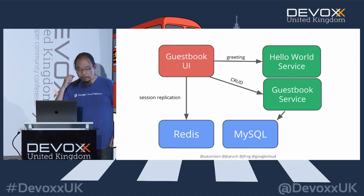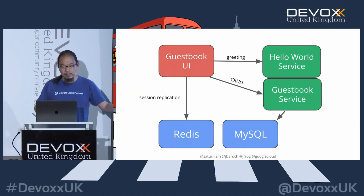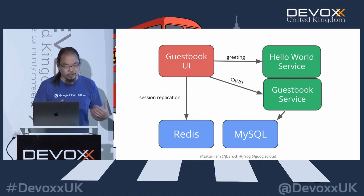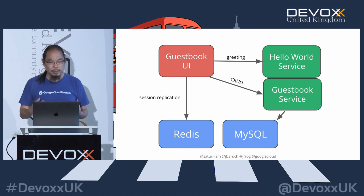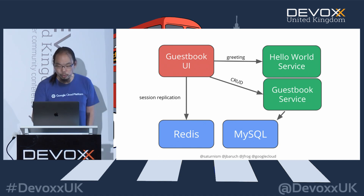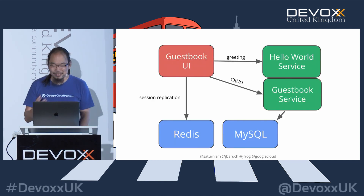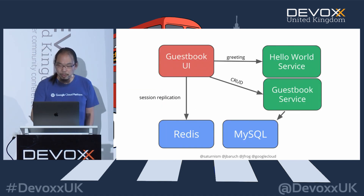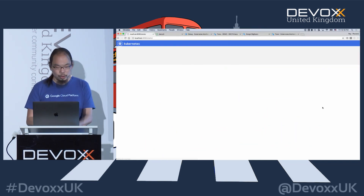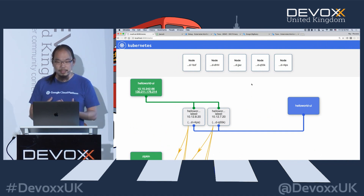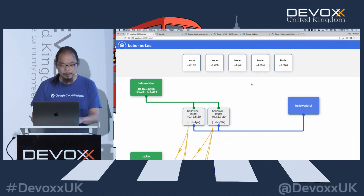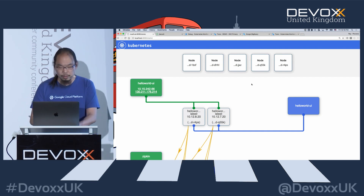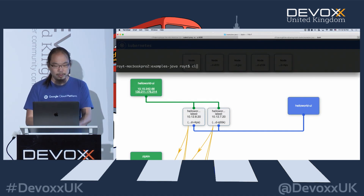To demonstrate everything, I have written a very simple microservices application. This is probably the best-looking application I can ever write — I'm not a front-end developer, so black and white jQuery is the best I can do. It's a very simple application combining two classic demos: hello world and a guestbook. The architecture behind the scenes has three different services: a front-end and two back-ends, storing data in MySQL, with session replication and sharing via Redis.